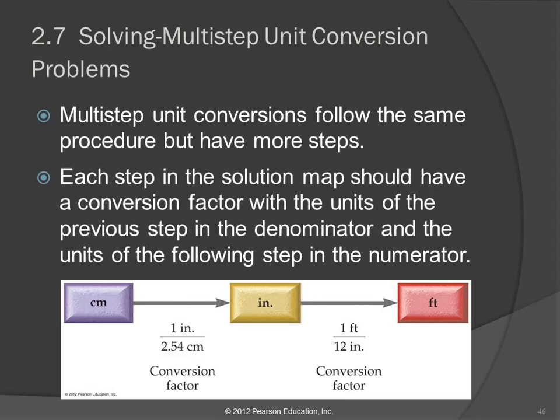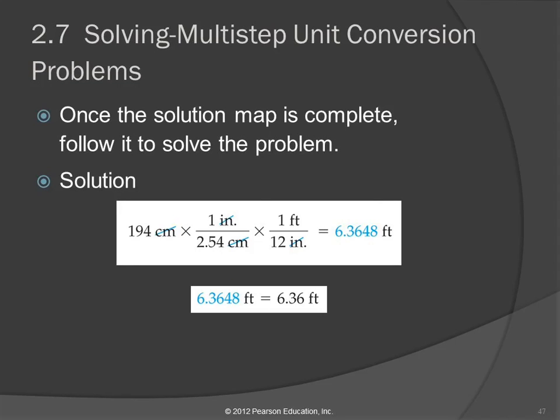We will need to learn how to do three-step conversions for something called stoichiometry that's going to come up later, and that's a really important part of chemistry. If we learn how to do this here — the multiple steps — with units that are a little more familiar, then when we get to stoichiometry it's not going to be hard at all. So you have to have a conversion factor for each of these transitions. Once you have that map complete, then you just follow it to solve the problem.